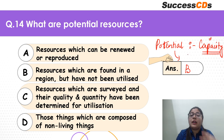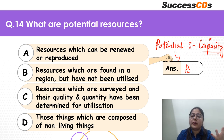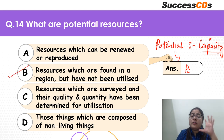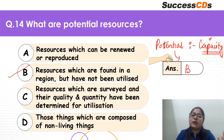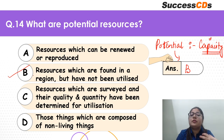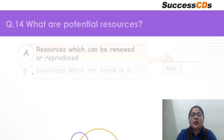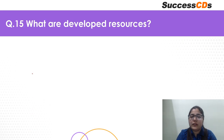That power and capacity is there — there is that potential — but it still remains to be utilized. If you perform well, your potential will actually be used. So B is the correct answer — found in a region but not yet utilized. If utilized, it will serve as a potential resource going forward.